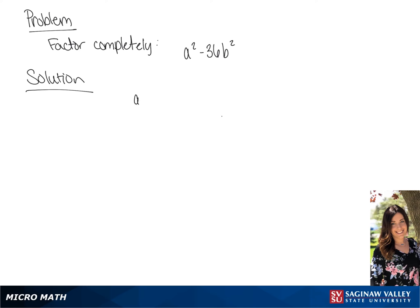We are going to factor a squared minus 36b squared. We're going to break this up into two binomials. We know that the first term in each binomial will be a. And then if we take the square root of 36b squared, we get 6b.